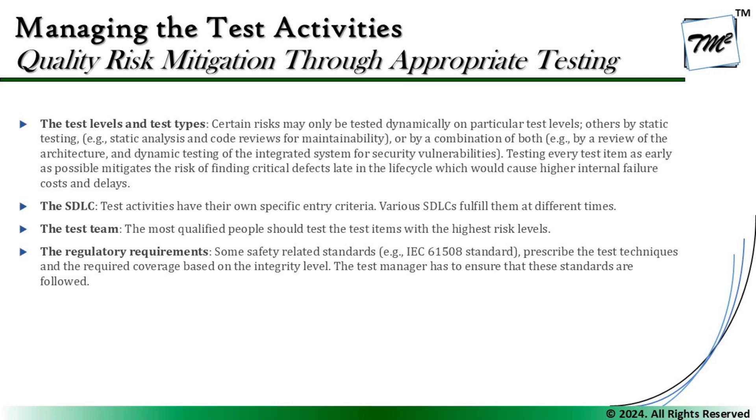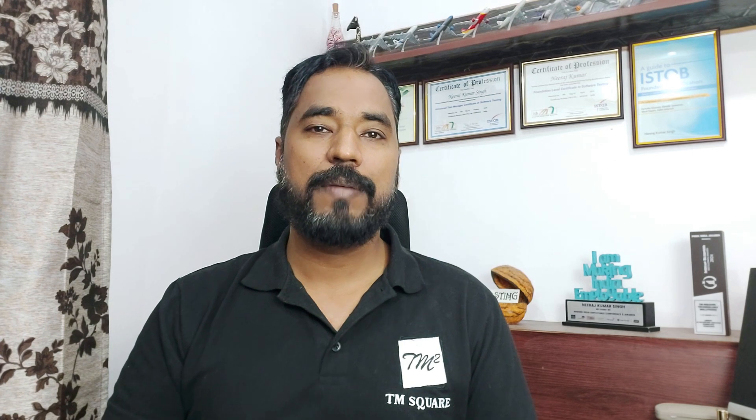The final factor is regulatory requirements. Some safety-related standards, like IEC 61508, prescribe recommended test techniques and required coverage based on the integrity level, and the test manager must ensure these standards are followed. Sometimes standards governing the project will have recommendations depending on different factors and we may have to align to them. For example, ISO 26262 and ASIL — Automotive Safety Integrity Level — for automotive products provide method tables with recommendations for which technique to use at each safety integrity level.